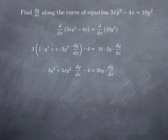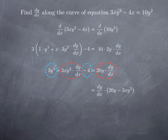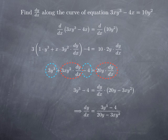We obtain: 3y cubed plus 3xy squared multiplied by dy/dx minus 4 equals 20y dy/dx. To solve for dy/dx, we put all terms containing dy/dx on one side — the right-hand side — and the remaining terms on the other. The terms without dy/dx are 3y cubed and negative 4. Dividing both sides by 20y minus 3xy squared, we get dy over dx equals (3y cubed minus 4) divided by (20y minus 3xy squared).